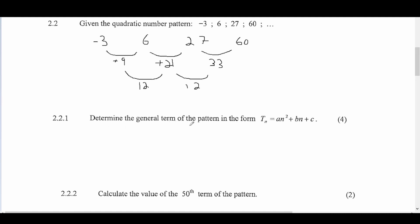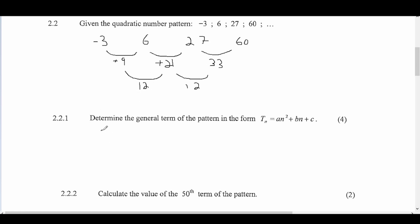Determine the general term in the form Tn equals an squared plus bn plus c. To find a, we use the fact that 2a equals the second-order difference, which is 12. Therefore a equals 12 divided by 2, so a equals 6.